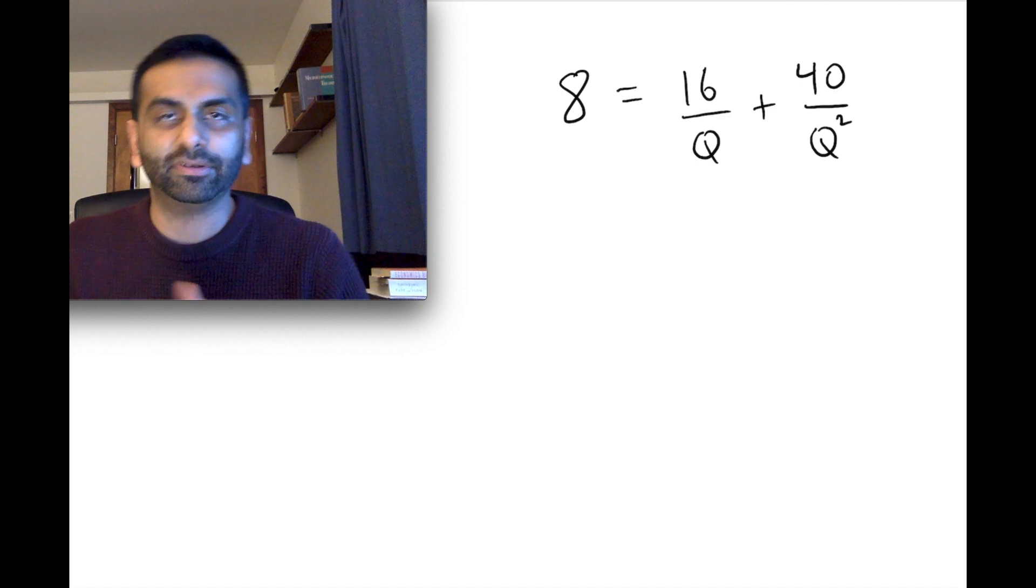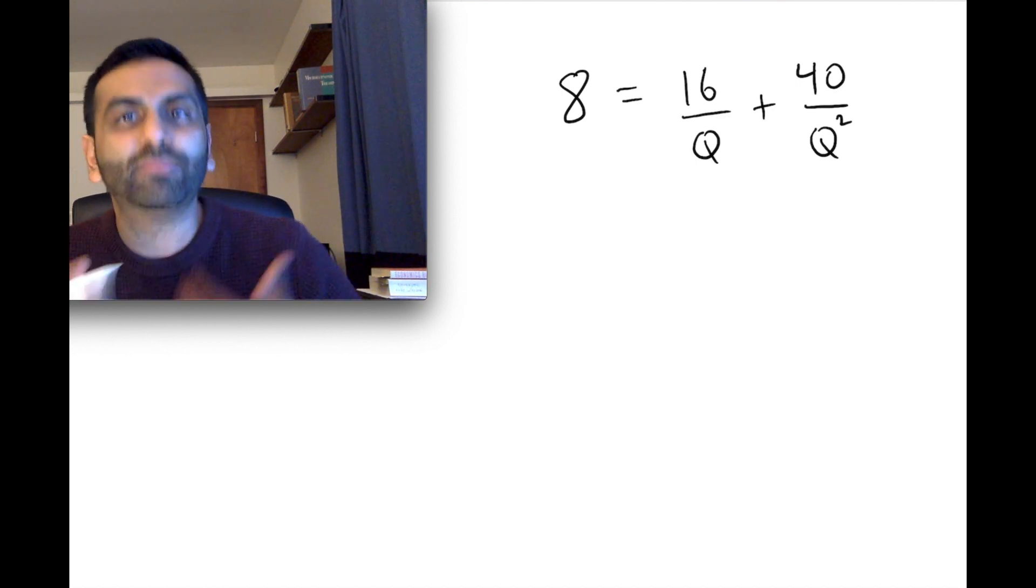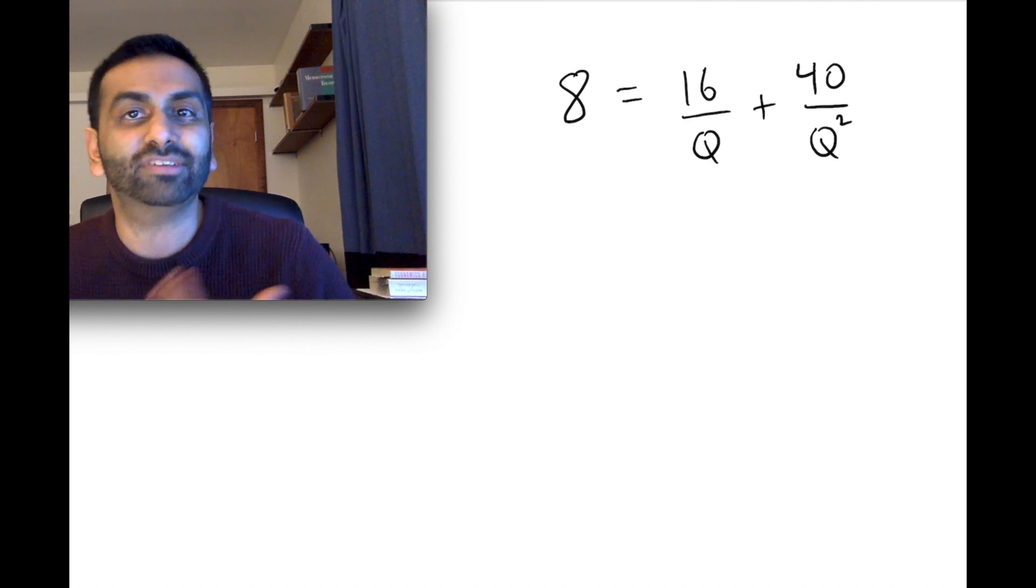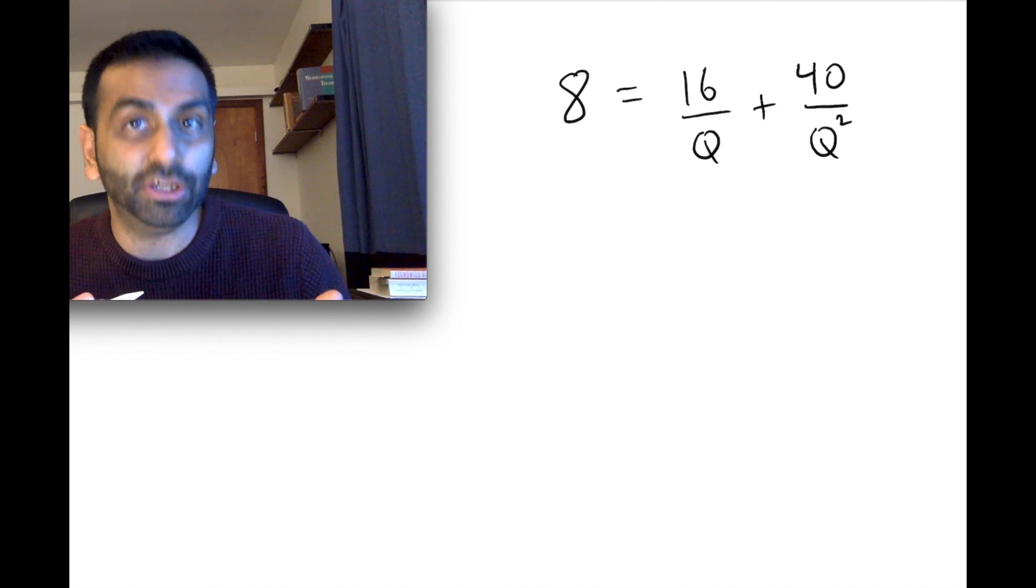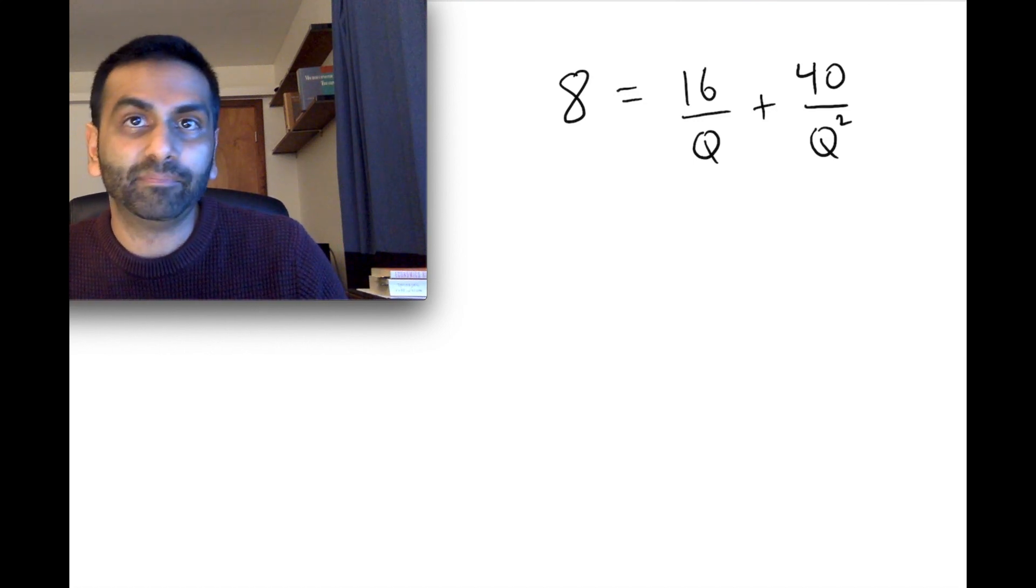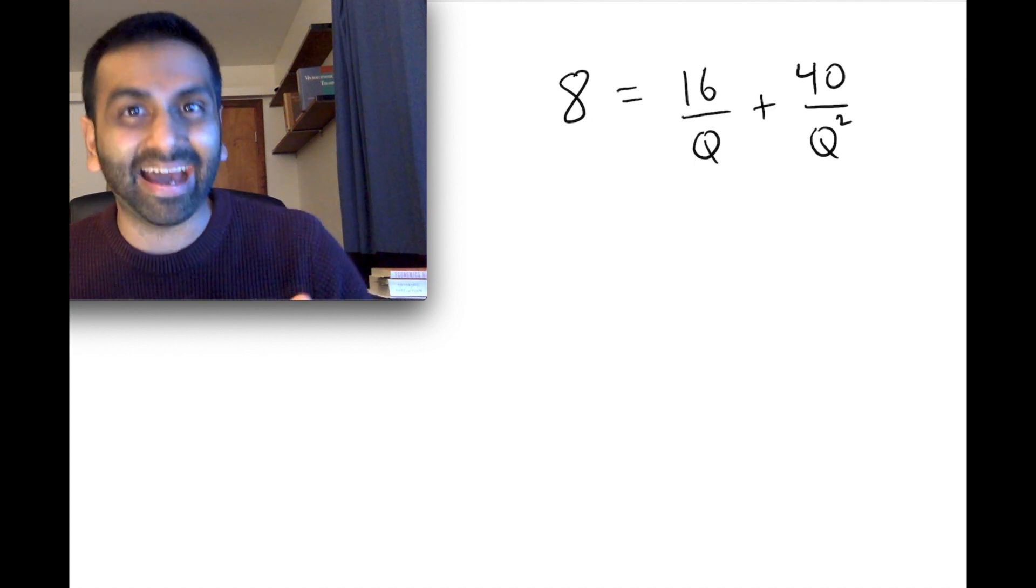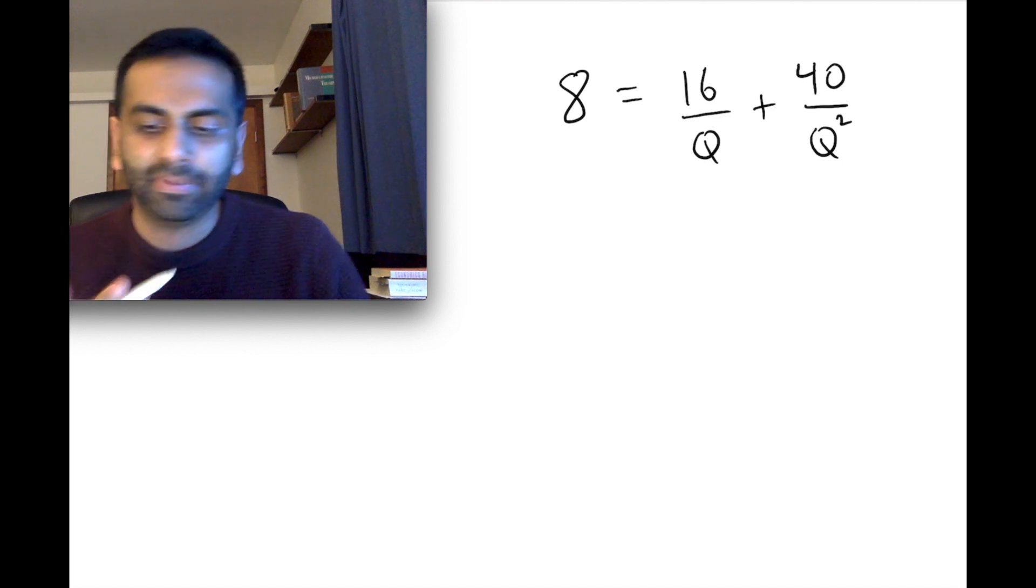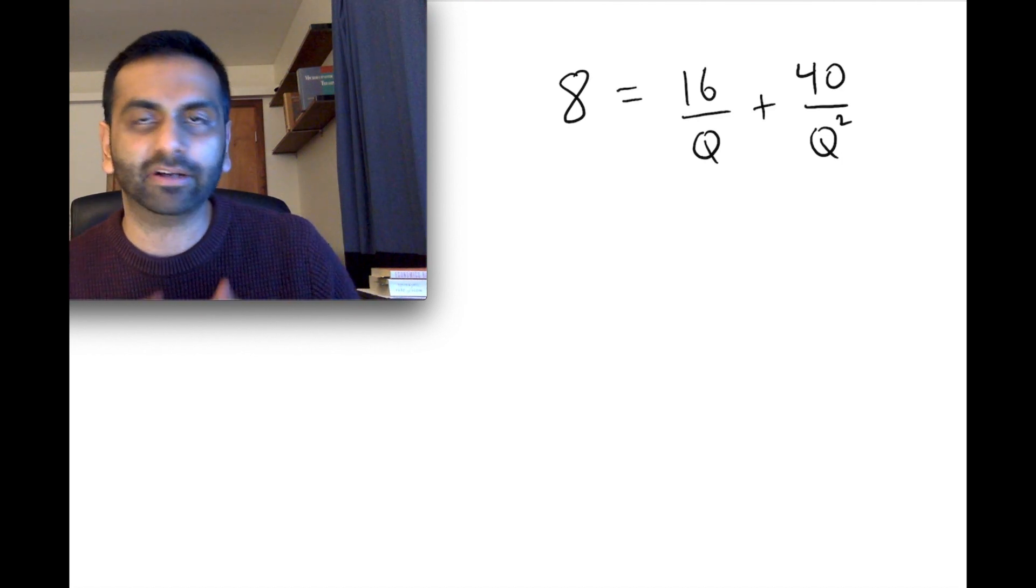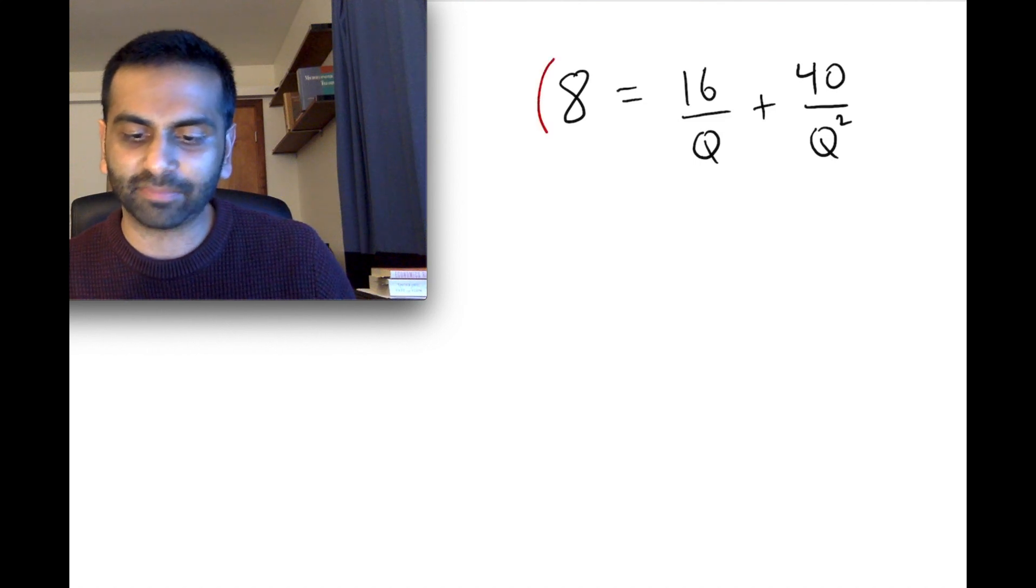So let's do that. Let's multiply both sides by, and again, if that doesn't occur to you, first of all, the more problems you do, the more it will start eventually occurring to you once you see a pattern. But even if it just maybe occurred to you, I'm going to multiply both sides by q, you can start there. And then you'll notice, oh, I can multiply by q again, and it will still simplify. And that's the same thing as multiplying by q squared. But let's just, to save some time here, multiply both sides by q squared.